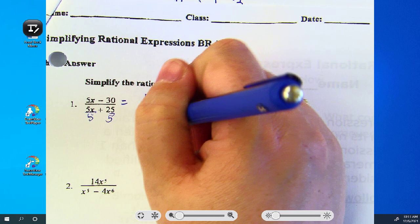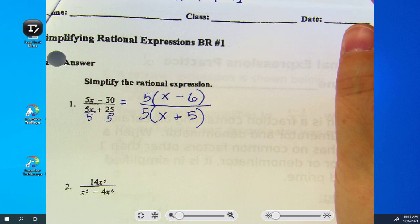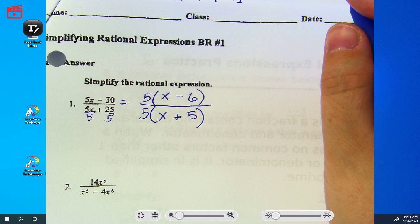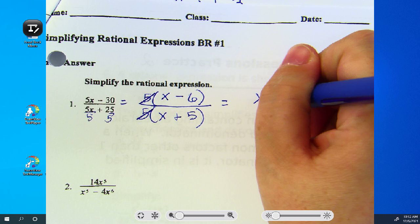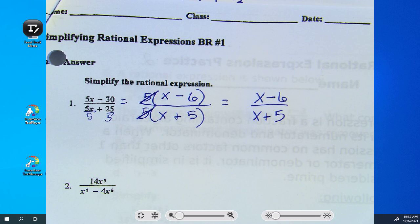What do you see that's in common? The GCF, the 5. You know 5 divided by 5 is 1. So what's left is x minus 6 over x plus 5. Questions?